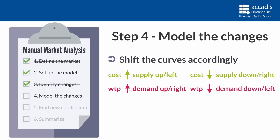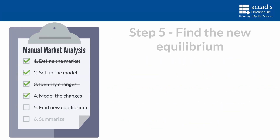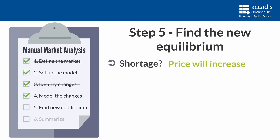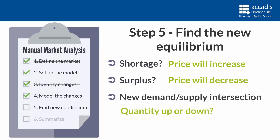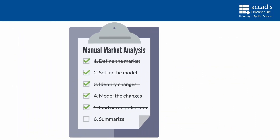After you have shifted the curve, take a look at what results if the price does not change from its initial value - you will either see a shortage or surplus. Step 5: Find the new equilibrium. Now there are only two options for prices: in case you identified a shortage, prices will increase, and in case of a surplus, they will decrease. The intersection will then show you how the quantity has reacted. In the end, there are four possible outcomes for any change: price up and quantity up; price up and quantity down; price down and quantity up; and price down and quantity down. Finally, Step 6: Summarize and explain your results.